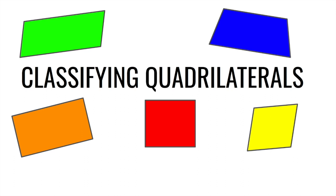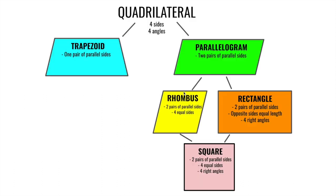In this video you will learn how to classify quadrilaterals. Quadrilaterals are polygons with four sides. The word part 'quad' means four, so quadrilaterals have four sides and four angles. These are all different types of quadrilaterals.